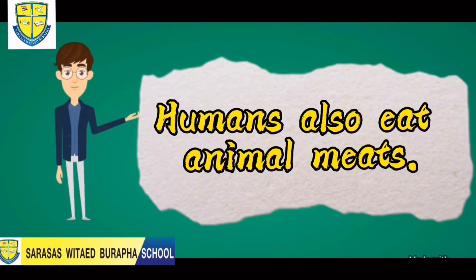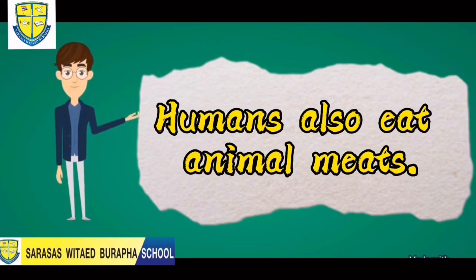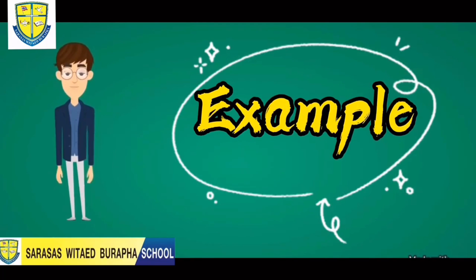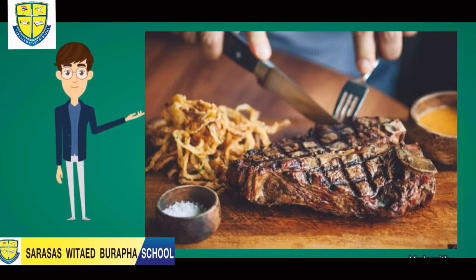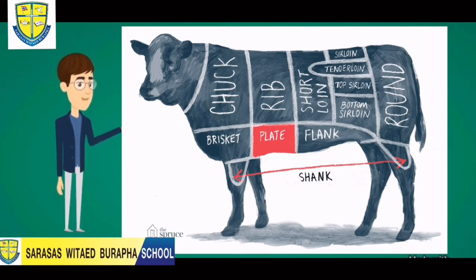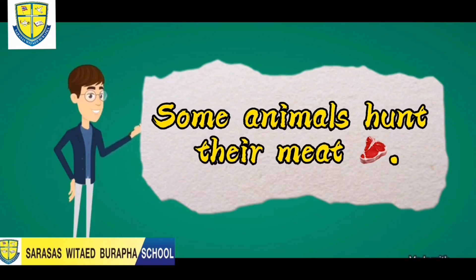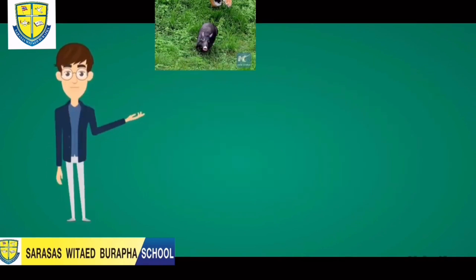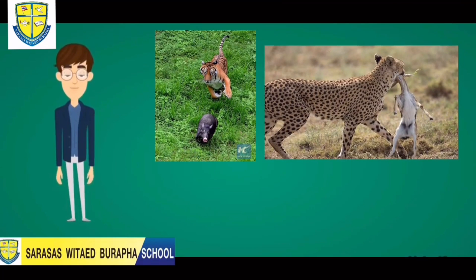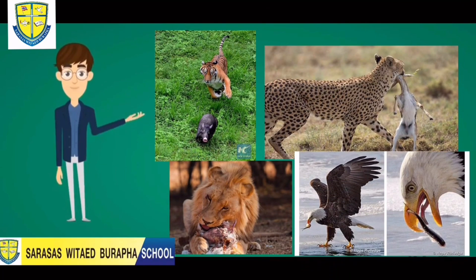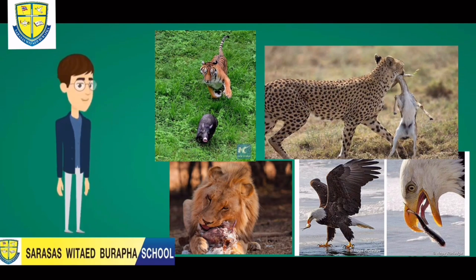Humans also consume animal meats. For example, beef steak — beef is from the meat of a cow. While other animals hunt their meat, just like animals in the wild: tiger, cheetah, lion, and even an eagle.